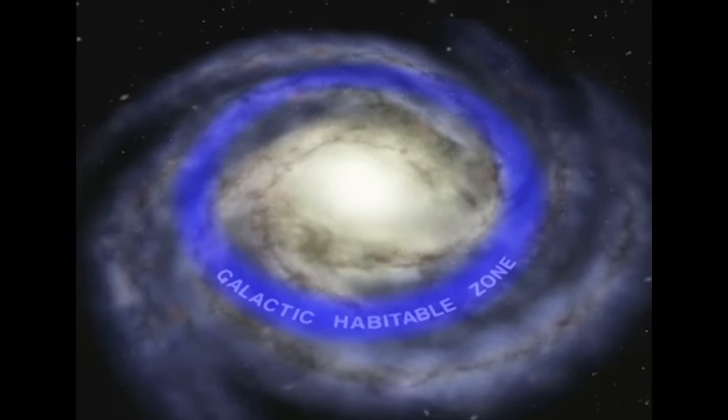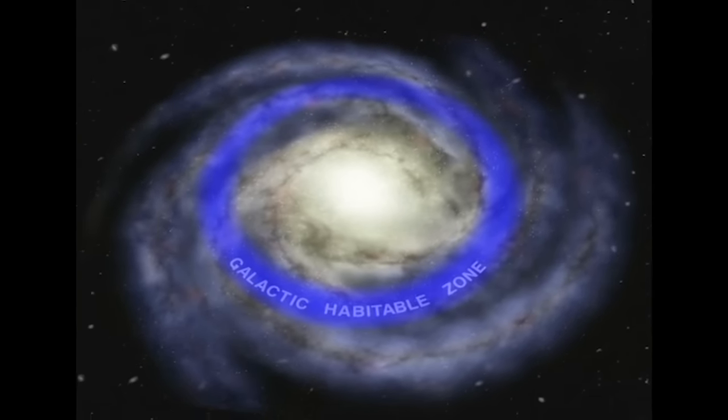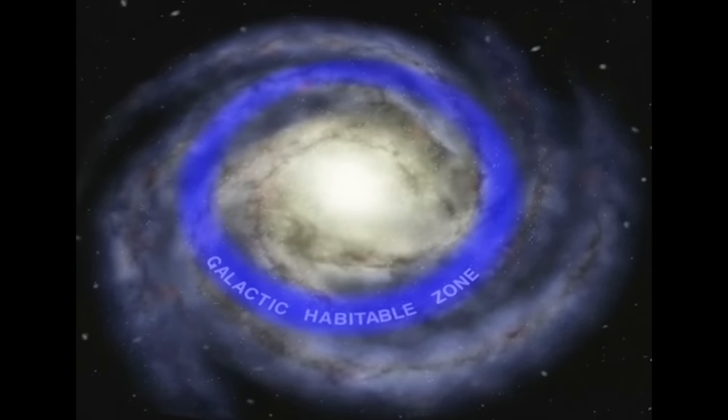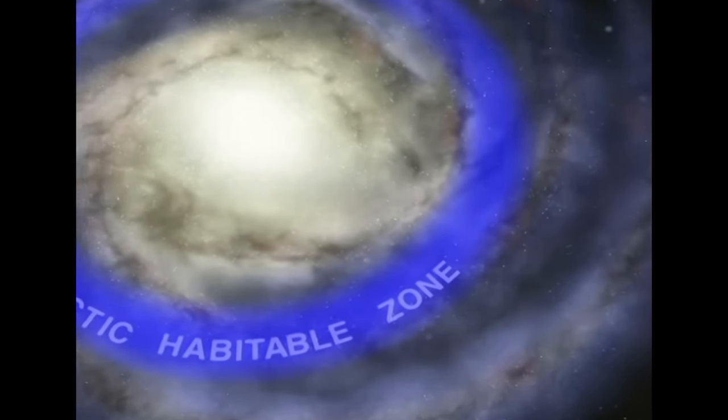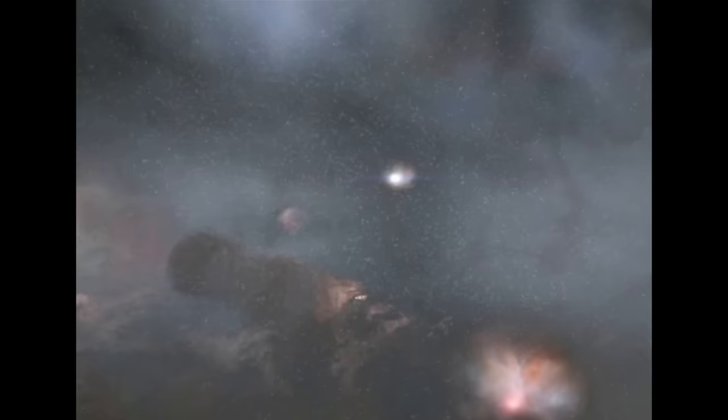While these obstacles to habitability are minimized far from the core and edge of the Milky Way, Gonzalez has also identified large areas within the galactic habitable zone itself which are less hospitable to complex life. Even within the habitable zone in the galaxy it's broken by the spiral arms which are dangerous places. That's where most of the supernovae go off in the galaxy. That's where the star formation is taking place. We don't want to be too close to a spiral arm. We want to be outside the spiral arm at about the right region of the galaxy.